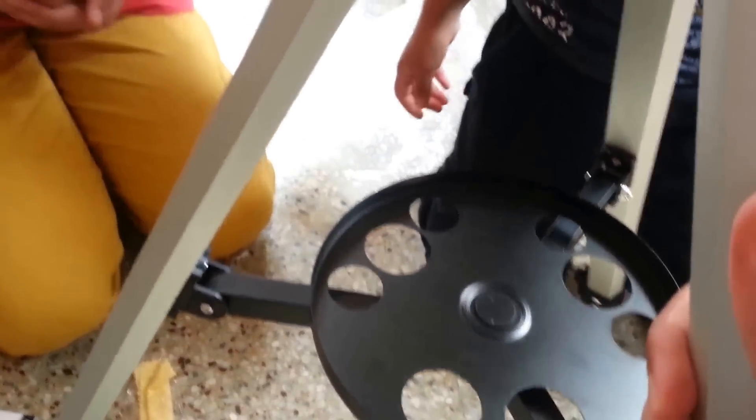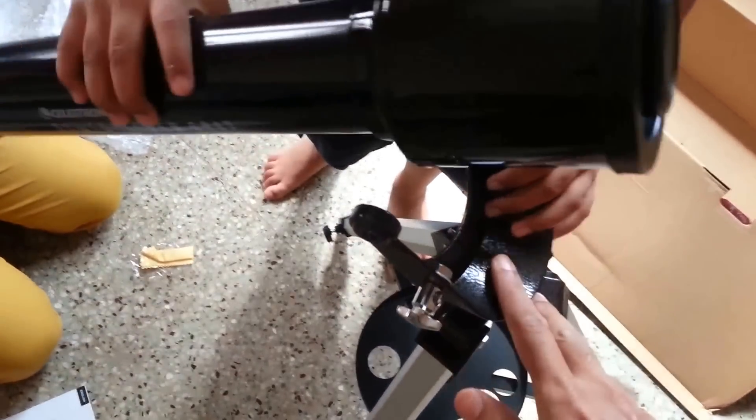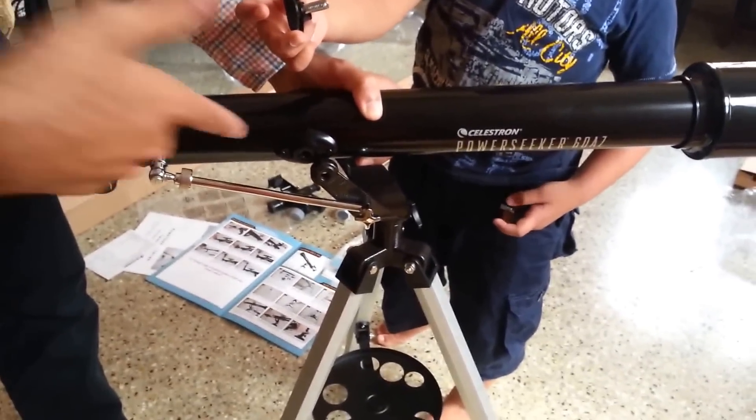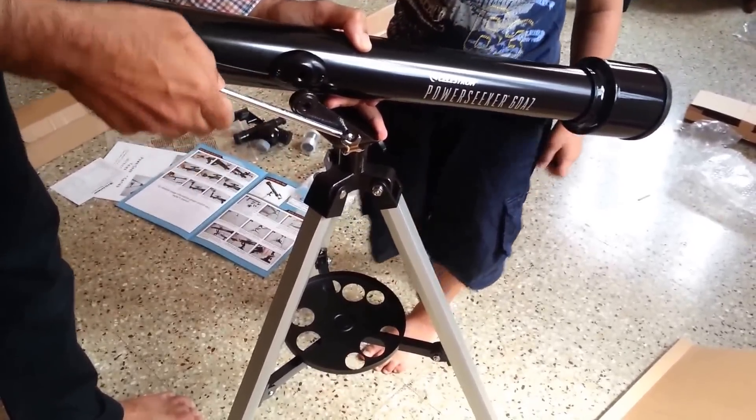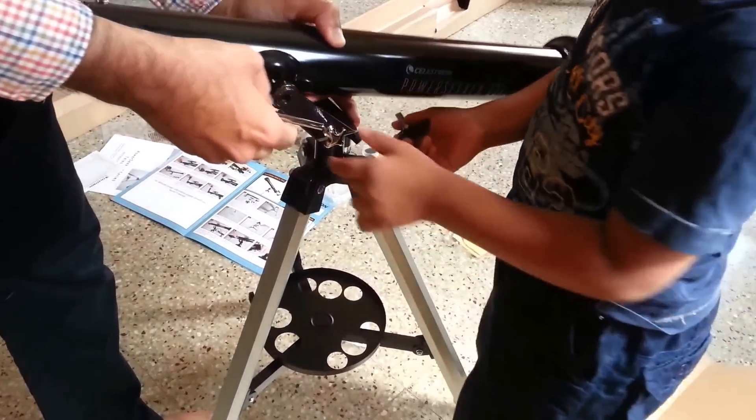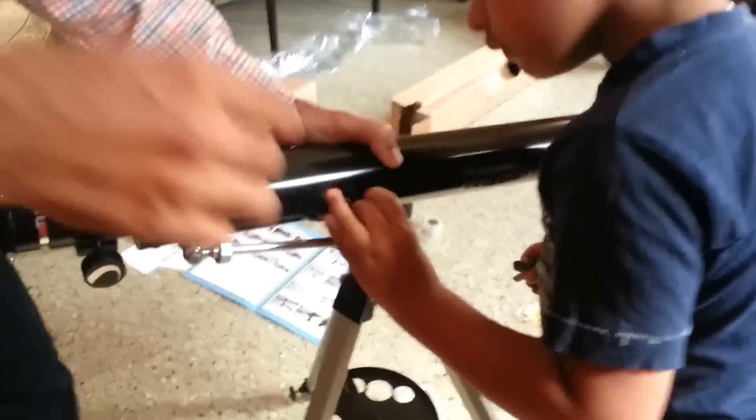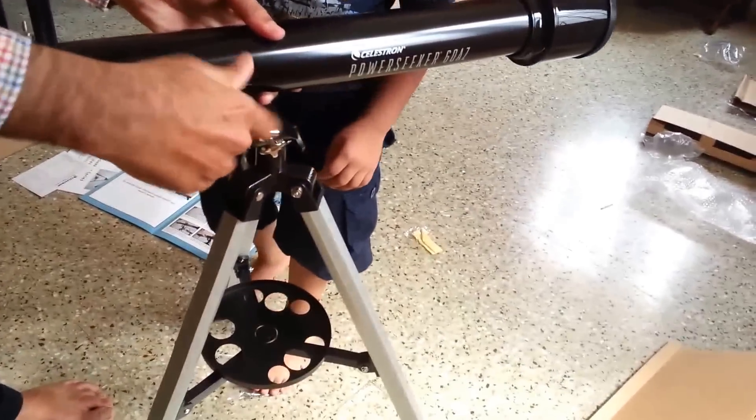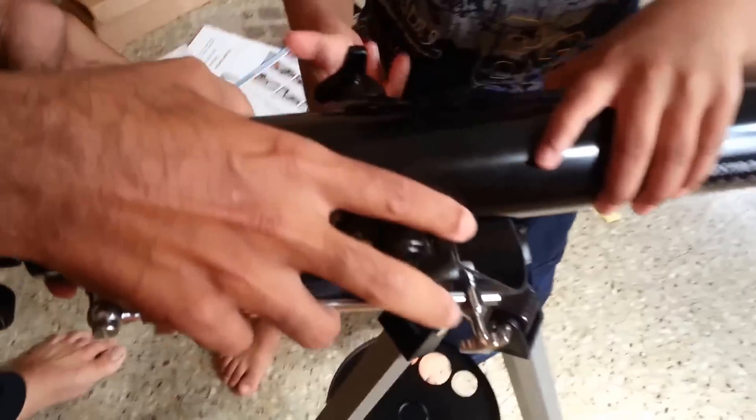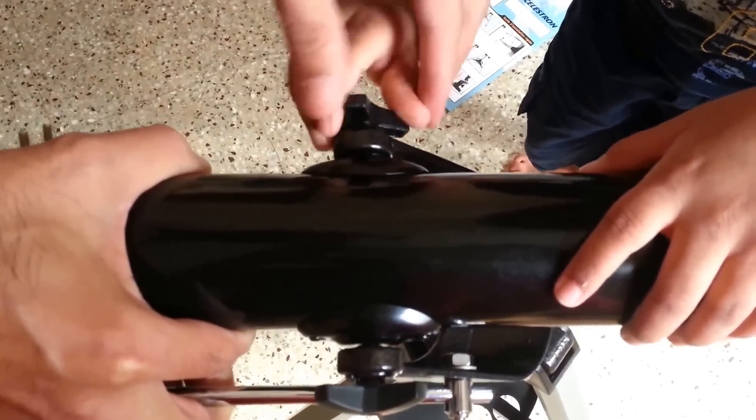Now we will fix the body of the telescope. We will take the body of the telescope and fix it on the altazimut stand here. So see our junior is tightening the screw. See to it that it is firmly fixed. I think it is fairly fixed here.